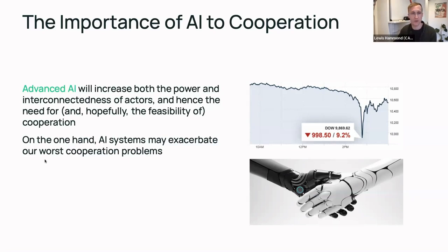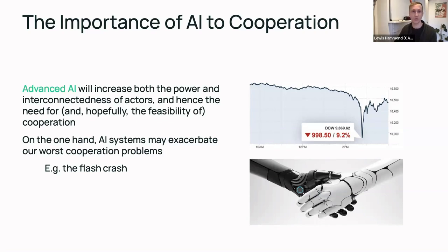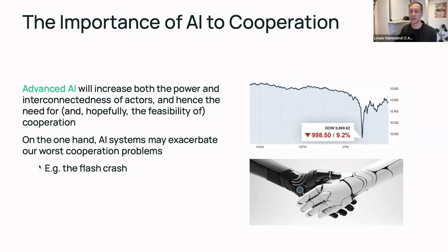One possible instance of this is the flash crash, which happened in the early 2000s. In a very short space of time, you can see on the x-axis of this plot that huge, vast quantities of wealth — on the order of a trillion dollars — were wiped off the stock market before, fortunately, it sprung back to roughly where it ought to have been. This was basically due to a series of automated trades between various automated trading agents that rapidly spiraled out of control at a scale and speed where human oversight wasn't able to fix it.